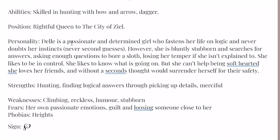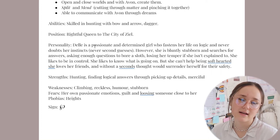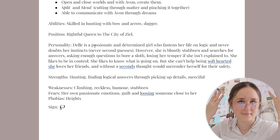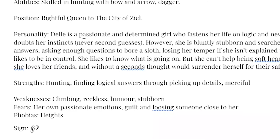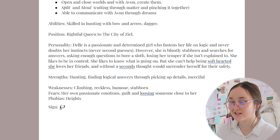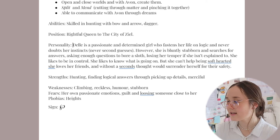Down below, we have strengths. This also has to do with their abilities and skills, but they also have to do with their morale and mental and physical skills. She's really good at hunting, and she's also very good at finding logical answers. Another thing is she's very merciful — she has a good heart and loves giving people mercy. Strengths are really important because you can get ideas on how to maybe turn them against the character. Maybe their strengths can become their downfalls. For example, Del is very merciful — maybe she shows mercy to someone she loves, and that ends up turning back on her.